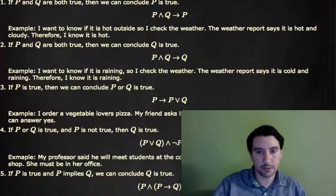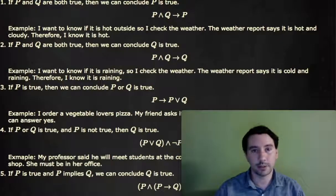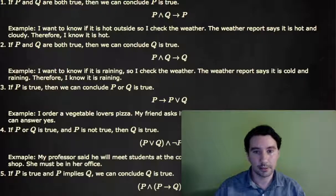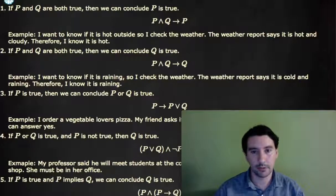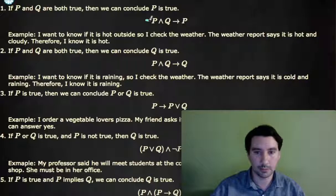These rules are fairly simple and straightforward to use, and each one will follow with an actual example in words that you could use when you're making an argument to see what it sounds like. So, if P and Q are both true statements, then we can conclude that P is a true statement. In other words, P and Q implies P.